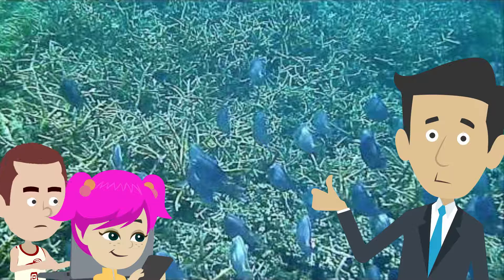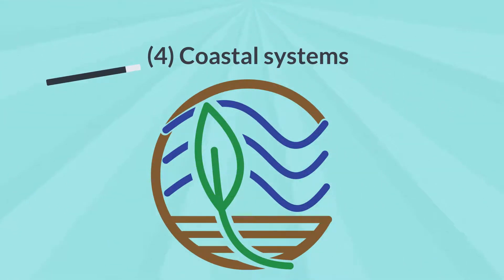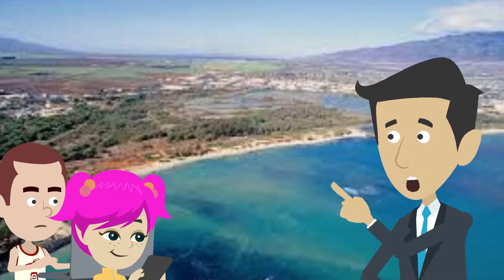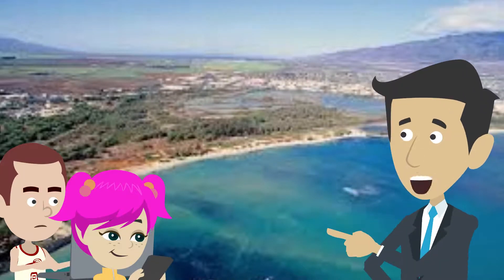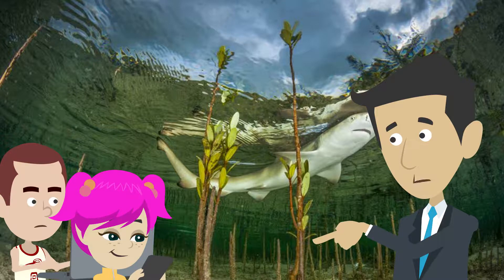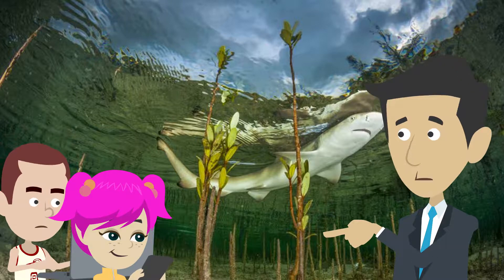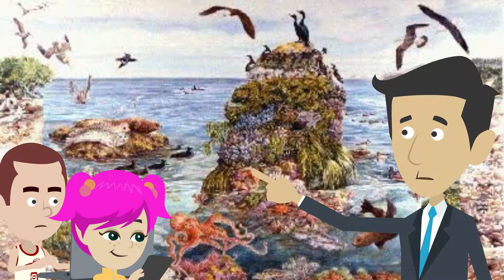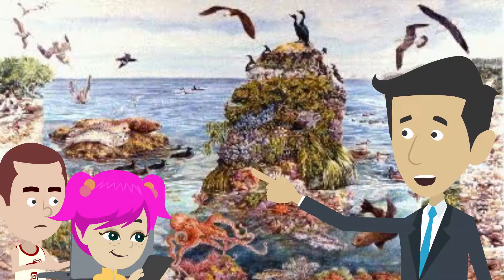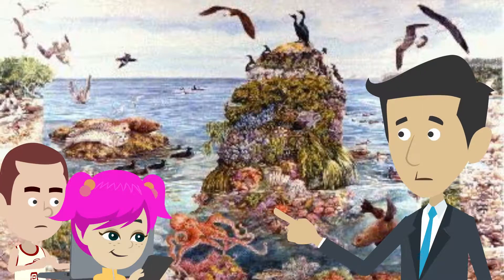Coral reefs are often referred to as ocean rainforests. Coastal Systems: together, land and water create coastal ecosystems. These ecosystems have a unique structure, diversity, and energy flow. Plants and algae have been found at the bottom of the coastal ecosystem. The fauna is diverse, consisting of insects, snails, fish, crabs, shrimps, lobsters, and more.